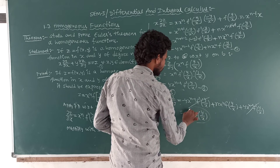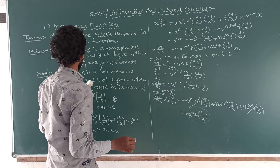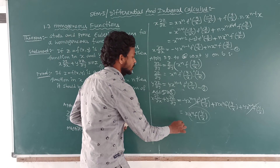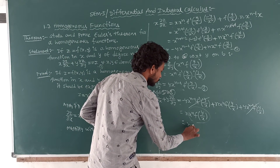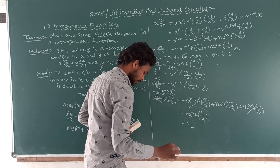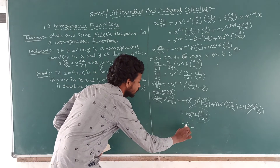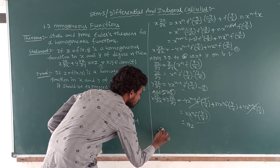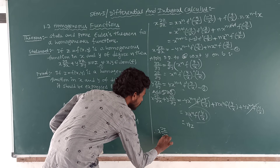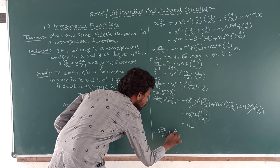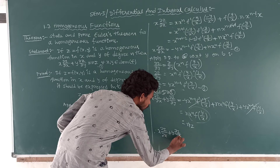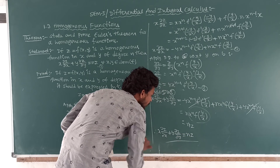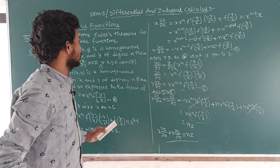Since x^n · f(y/x) = z, the expression becomes nz. Therefore, x·∂z/∂x + y·∂z/∂y = nz. This is our final answer — hence proved. This is Euler's theorem.